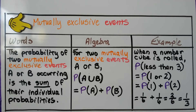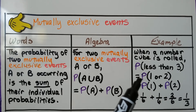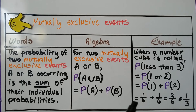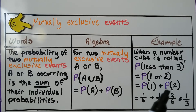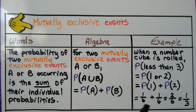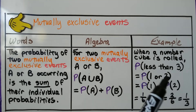For example, when a number cube is rolled, the probability of getting less than three is equal to the probability of one or two — those are the numbers less than three. It's equal to the probability of one plus the probability of two. Each number cube has six sides; only one side has a one, so that's a one-sixth chance. There's only one side with a two, so that's also one-sixth. We add one-sixth plus one-sixth and get two-sixths, which reduces to one-third.